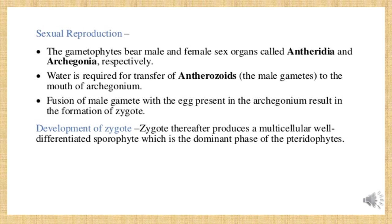The zygote undergoes further development and produces a multicellular sporophyte, which is the dominant phase of pteridophytes. The sporophyte is a plant that bears the spores and represents the diploid stage of the plant.